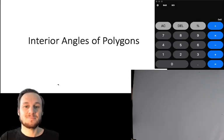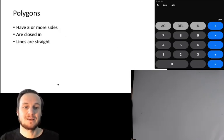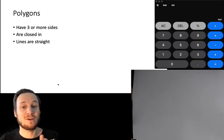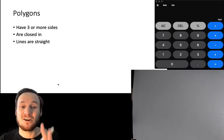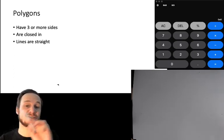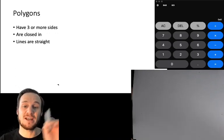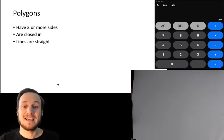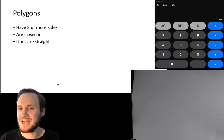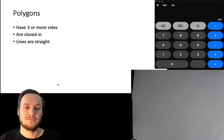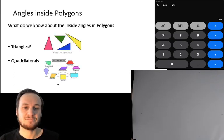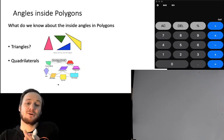Let's refresh ourselves on what polygons are. Polygons are shapes that have three or more sides. They're closed-in shapes and their lines are straight, so they're not circles and they can't be a two-sided shape, which you can't have unless you have a curved side anyway. So triangles and bigger.